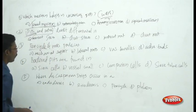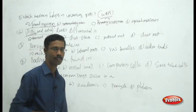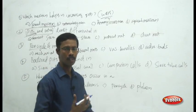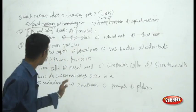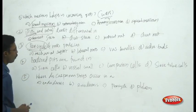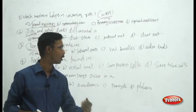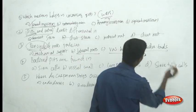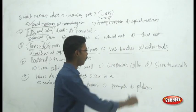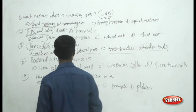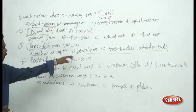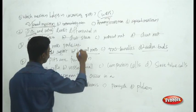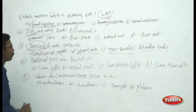Next question: the pericycle of roots produces what? The pericycle is a layer just adjacent to the endodermis, which is intercepted by xylem and phloem. The choices are mechanical support, lateral roots, vascular bundles, and adventitious buds. You can eliminate vascular bundles and adventitious buds. Choosing between mechanical support and lateral roots, the answer is lateral roots — the pericycle produces lateral roots.